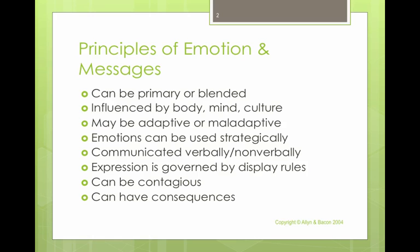The third explanation is called cognitive labeling theory. Here, you interpret the event first — something happens and you begin to interpret it. As you interpret it, your body responds physiologically. This is similar to James-Lange theory in that an event occurs and your body does something. But the difference is you then decide what emotion you're experiencing — was that fear, joy, anger, annoyance? There's a bit more thought involved in cognitive labeling theory than in James-Lange theory.